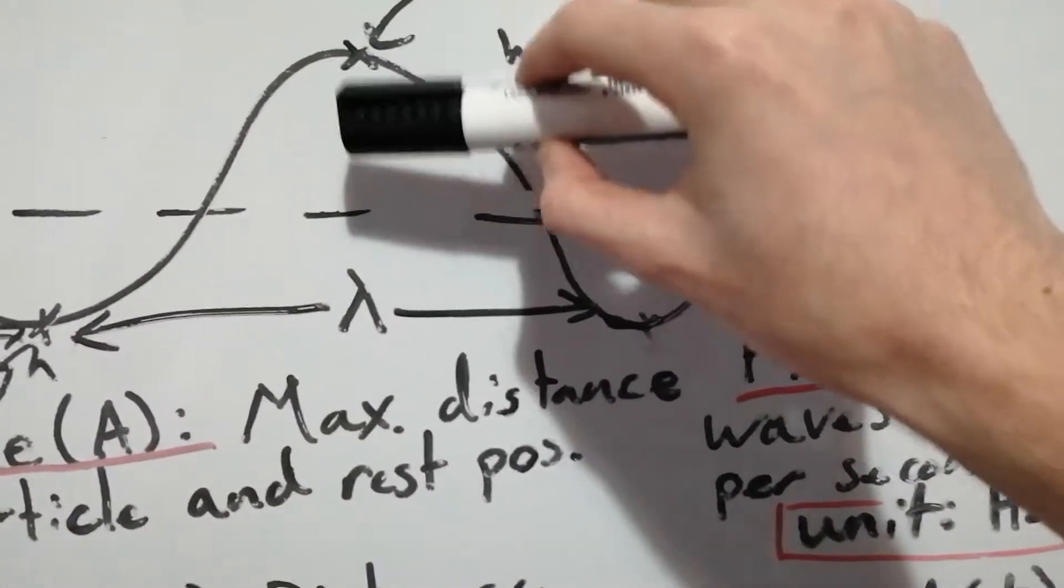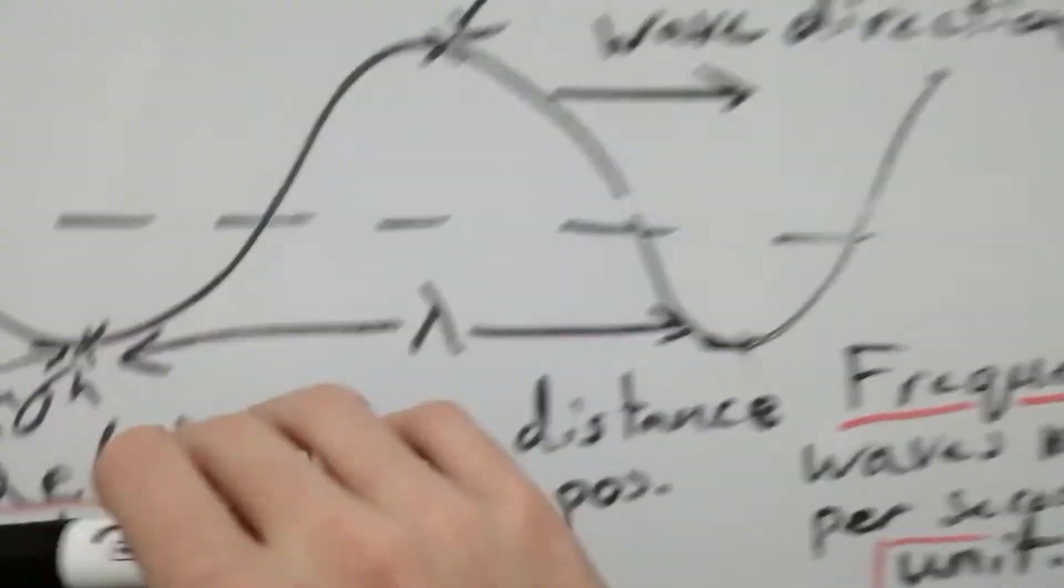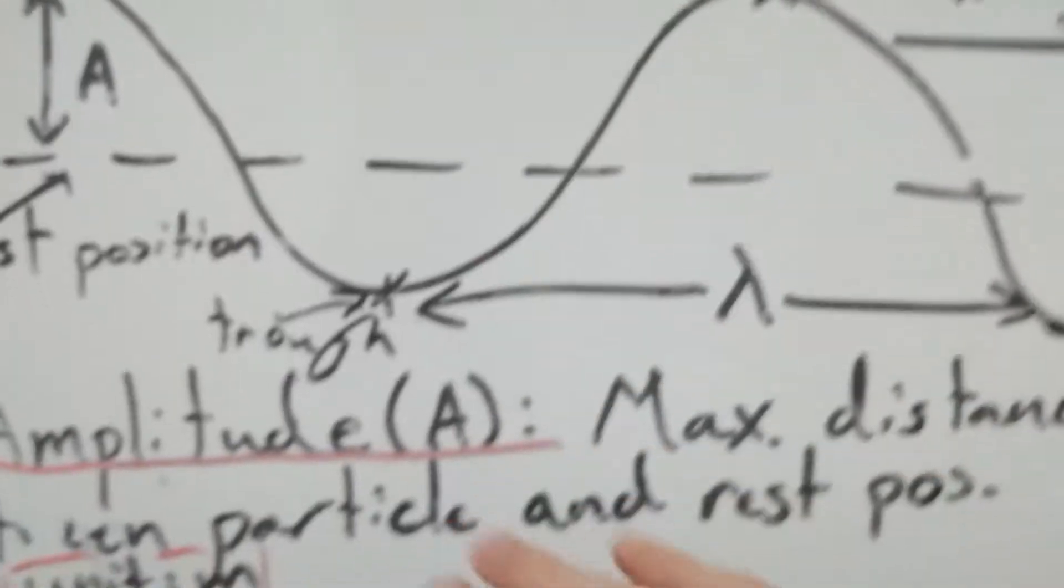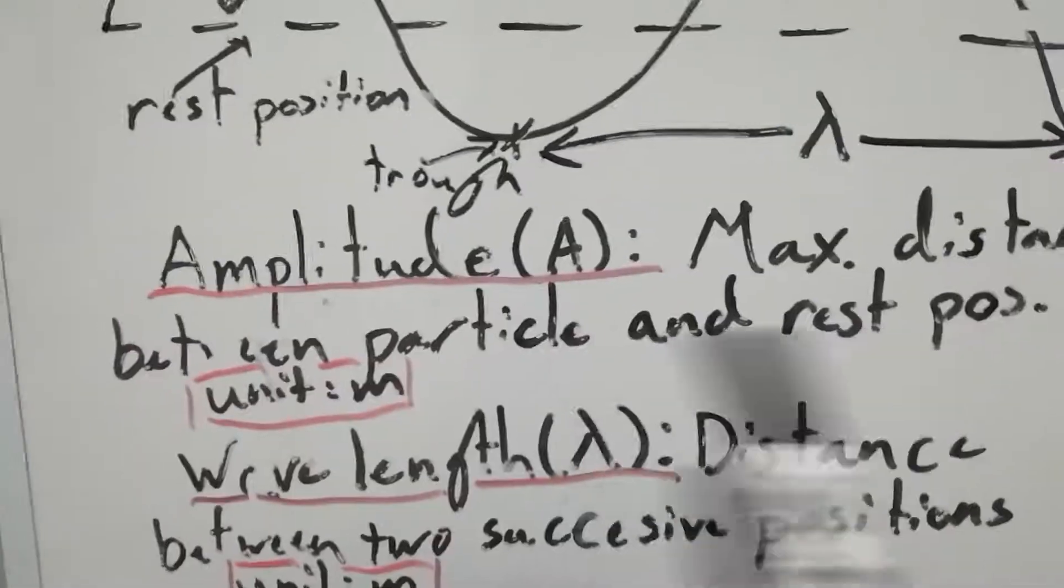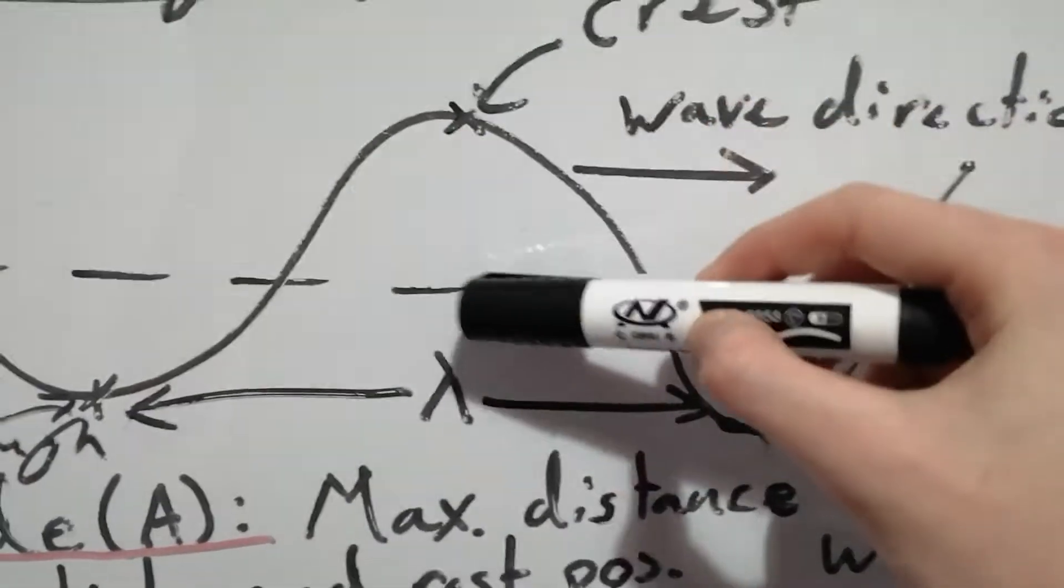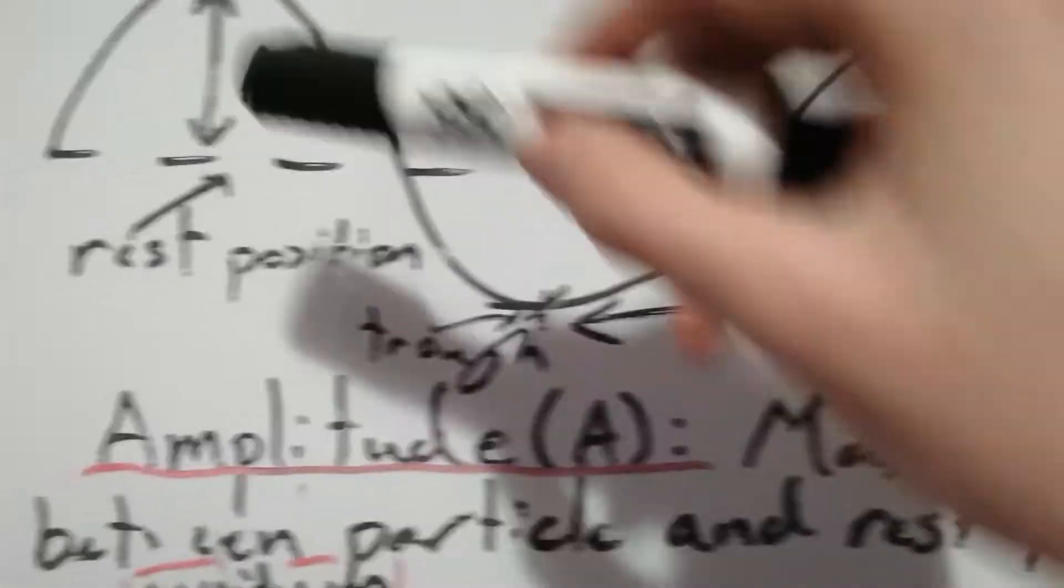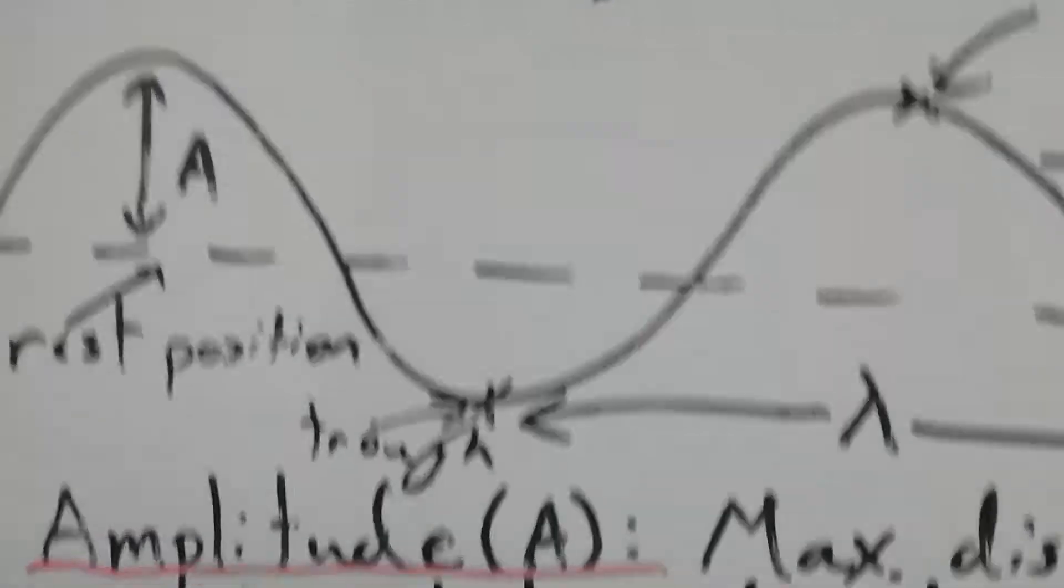Crests are the furthest point above the rest position that the wave enters, and troughs are the lowest point below the rest position that the wave enters. Amplitude is the maximum distance between a particle and its rest position. We measure from the crest to the rest position, or from a trough to the rest position, and that gives us amplitude.